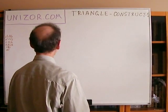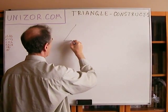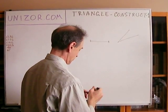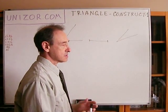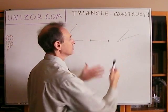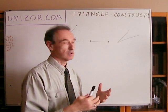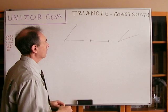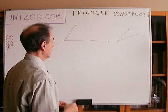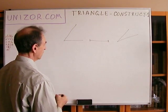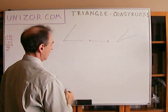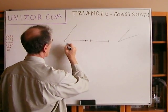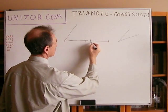Next: angle, side, angle. If you have a triangle defined by an angle, a side, and another angle — the segment is the base, one angle on the left and one on the right. We take one of the given angles and construct the segment equal to the given side on one ray of that angle.